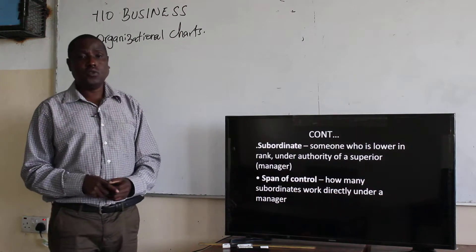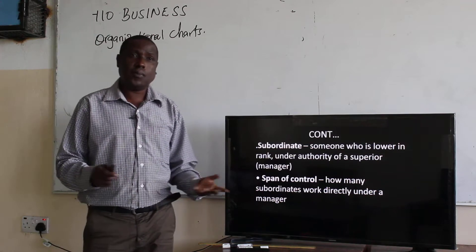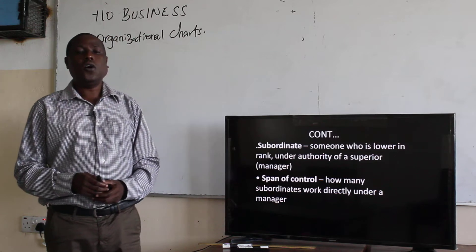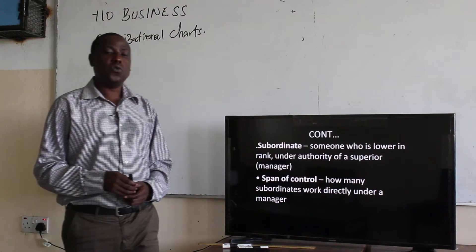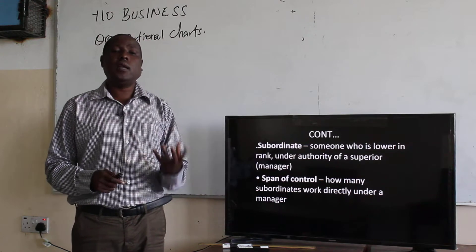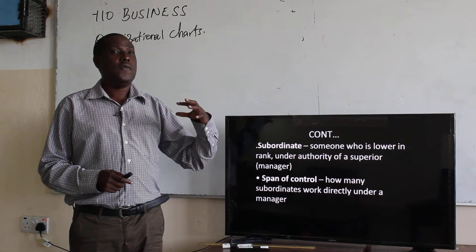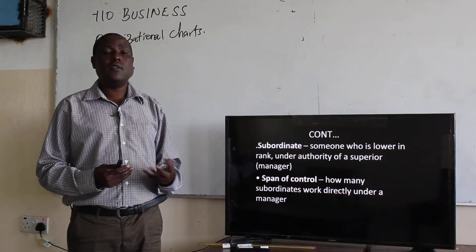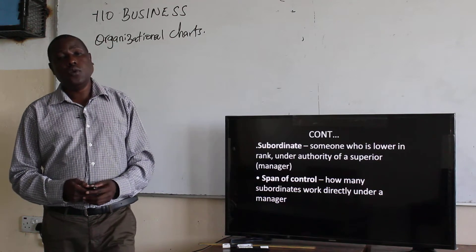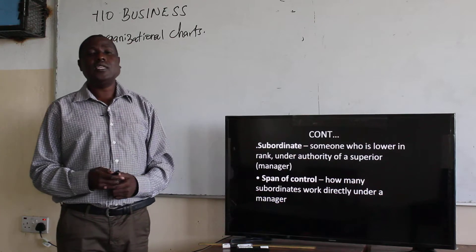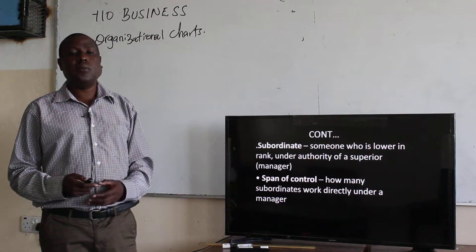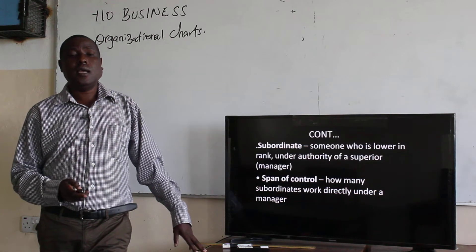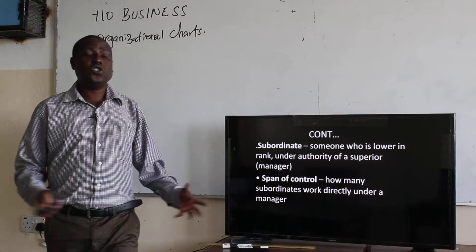The second term we want to discuss is what we call subordinates. A subordinate is someone who is lower in rank under the authority of a superior. So, like if I am the teacher, the prefect is a subordinate — they are lower in rank. The other term is span of control, which simply refers to how many subordinates work directly under a manager.